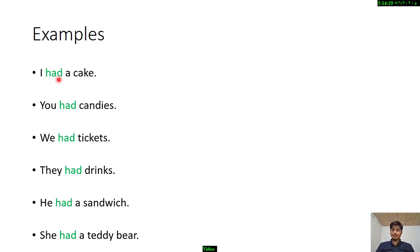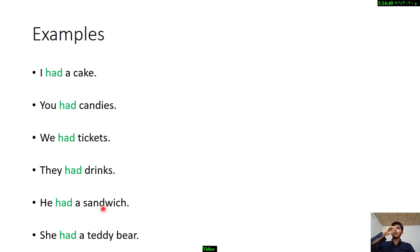Had has different meanings. For example, 'I had a cake,' 'You had candies,' 'He had a sandwich' — here, 'had' means 'ate.' I had a cake means I ate a cake. You had candies means you ate candies. He had a sandwich means he ate a sandwich.